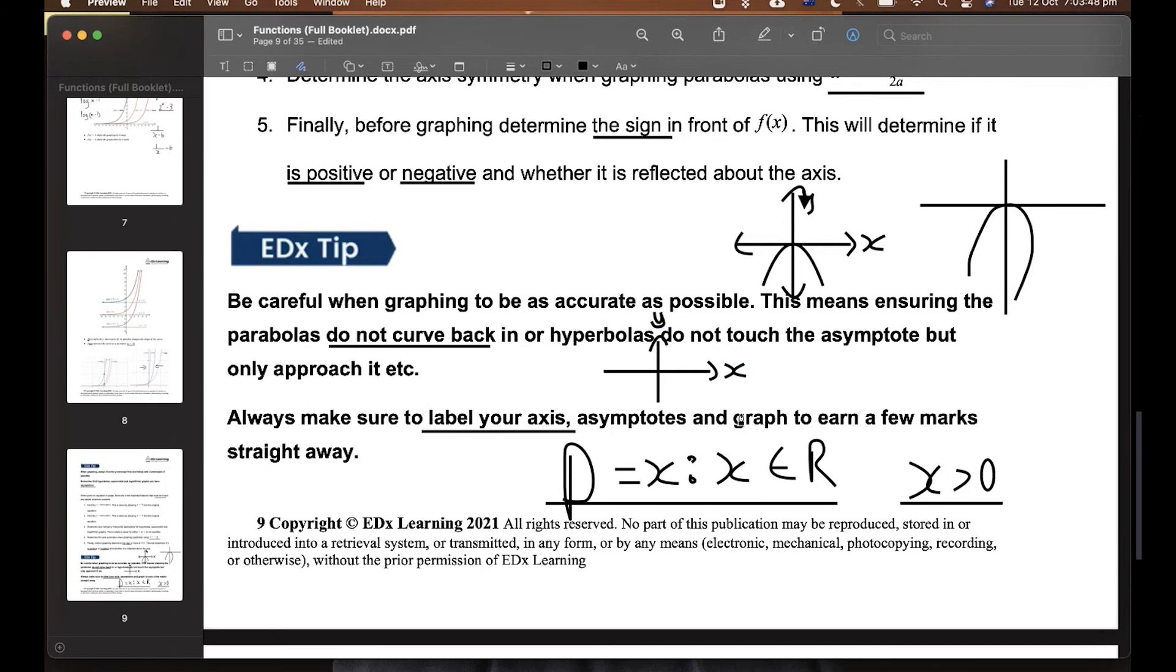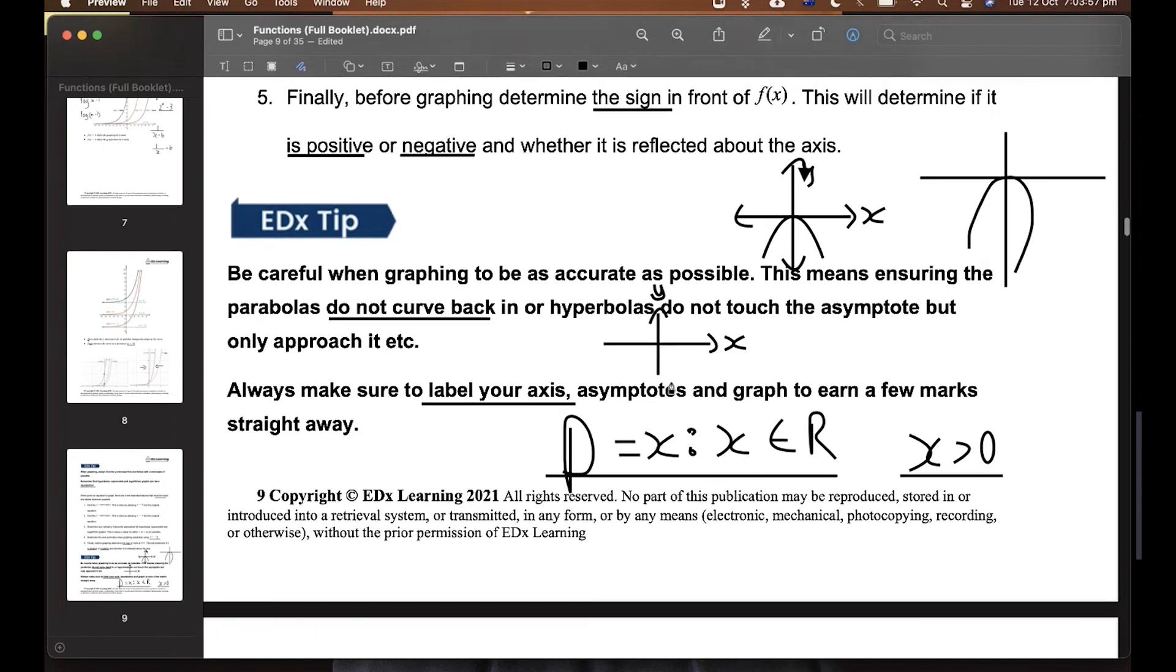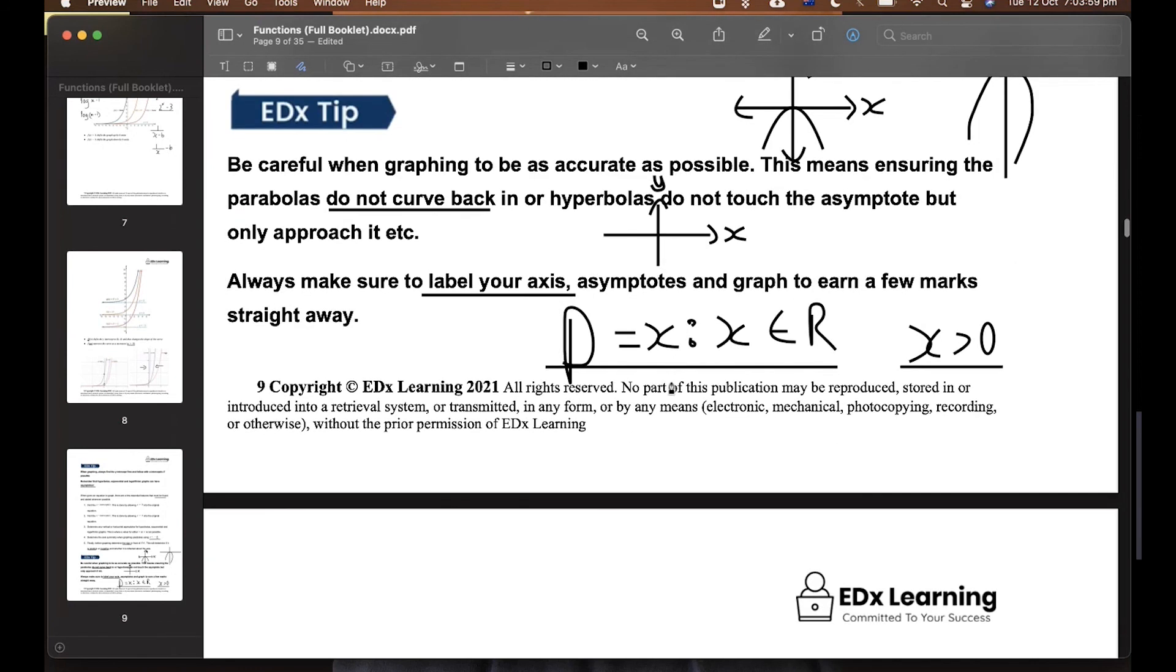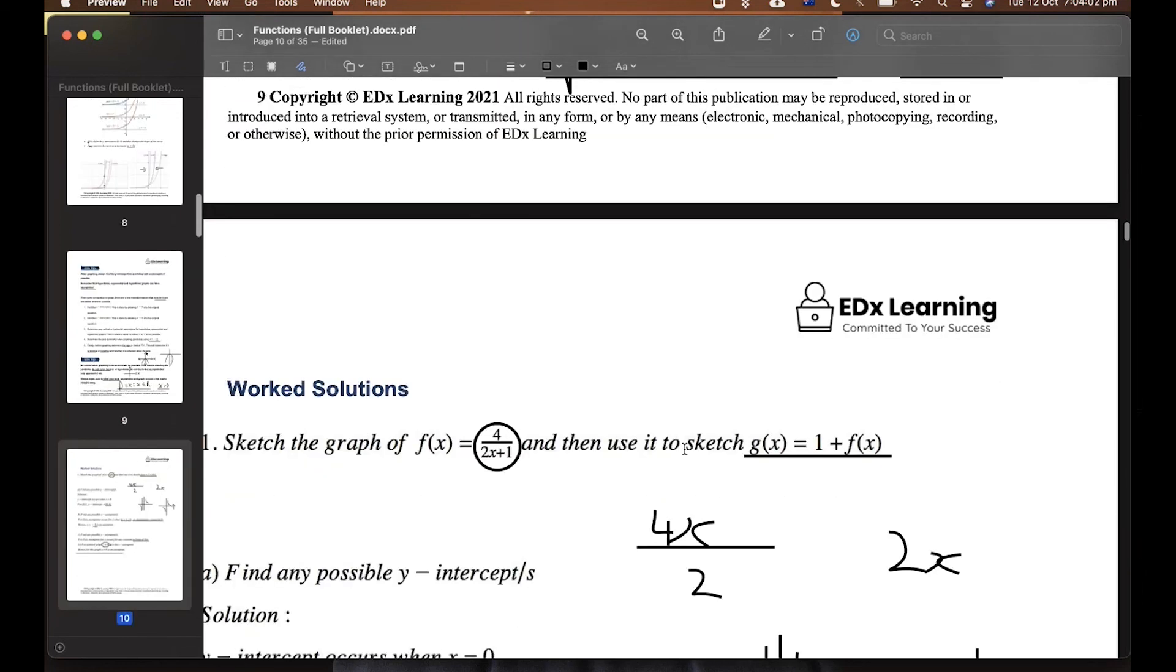We have to make sure that we label our axes and we're drawing our arrows because our axes are continuous, they keep going. Remember that. Usually for drawing questions, you'll lose a mark if you don't do this. I know I have, so I'm just speaking off of experience. You have to make sure that you label your axes. All good? Any questions about that? No, all good. Okay, cool.